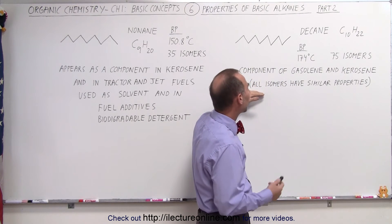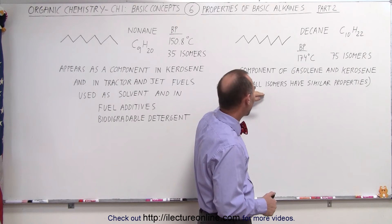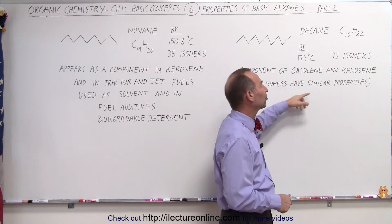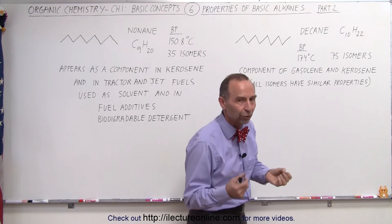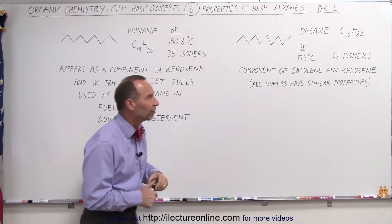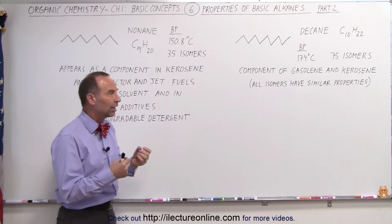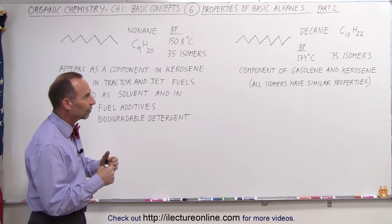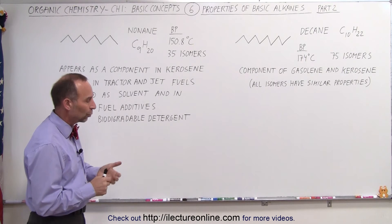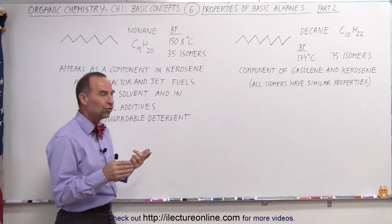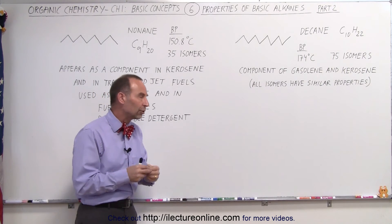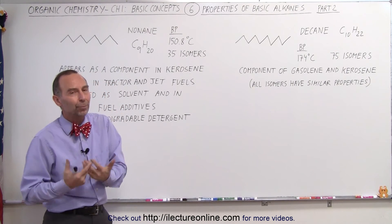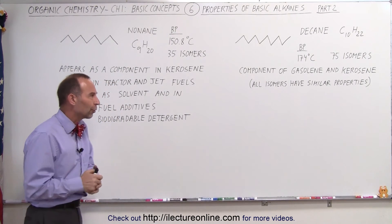Once you get up to the higher numbers of carbon atoms in a chain, you begin to notice that many of the isomers have similar properties, so they don't diverge too much in boiling point and other properties across the various isomers. We'll also look at how much energy you need to put the components together, and how much energy you get out by burning it — but that is for later videos.